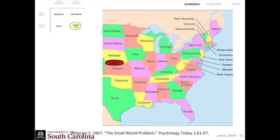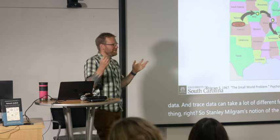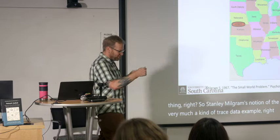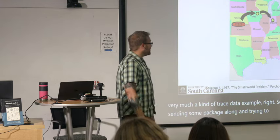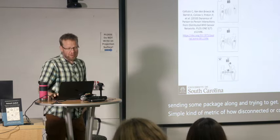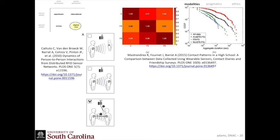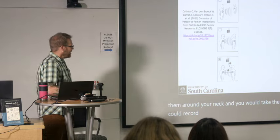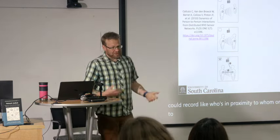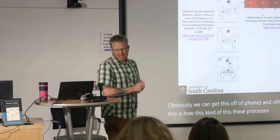The last modality I'll talk about is trace data, which can take a lot of different forms and is not new. Stanley Milgram's notion of the six degrees of separation is very much a trace data example — people sending a package along to get a simple metric of how connected a population was. We're seeing any number of ways trace data can be used today. Early examples include motes worn around the neck at meetings to record who's in proximity to whom or who's potentially talking to whom. Obviously we can get this from phones and other things more easily now, but this is how these processes started being translated into digital contexts.